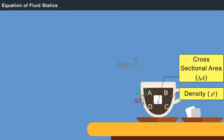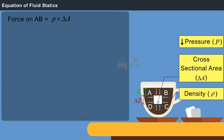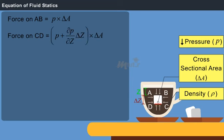The fluid element is subjected to different magnitudes of pressure at each direction. On surface AB, the pressure acts perpendicularly in the downward direction. The pressure force on surface AB is represented by P into delta A. On the opposite surface CD, the pressure acts perpendicularly in the vertically upward direction. The pressure on surface CD is represented by the equation P plus ∂P/∂Z into delta Z into delta A.